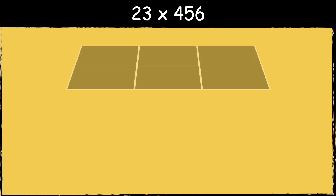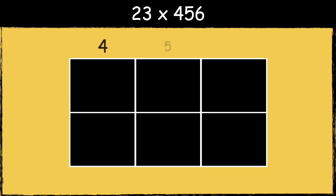Here is the first example: 23 multiplied by 456. First we draw a box similar to the grid method. As we're multiplying a two-digit number by a three-digit number, the box needs to be two by three. We put 456 along the top and 23 along the side.